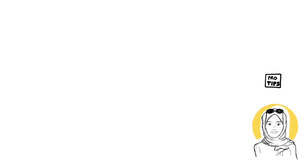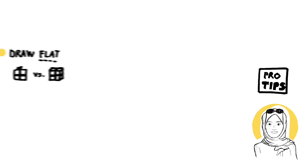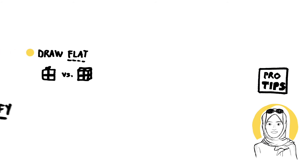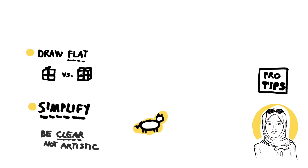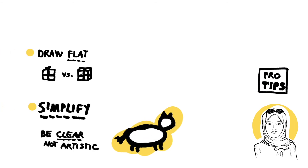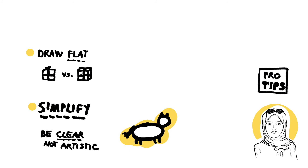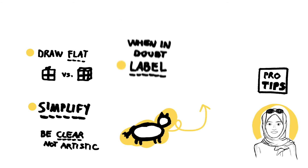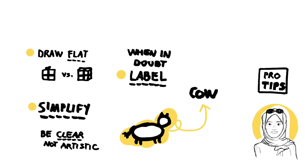Here are some pro tips to bring visual thinking to the next level. Draw flat. Simplify your drawing. Be clear, not artistic. Add labels to your drawing when you are in doubt.